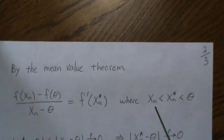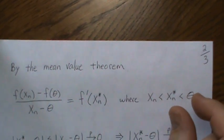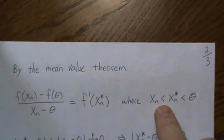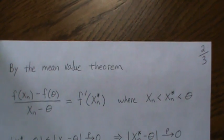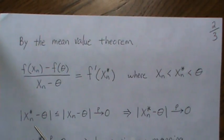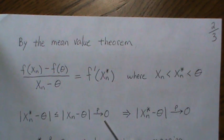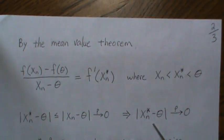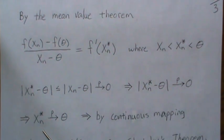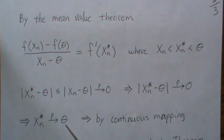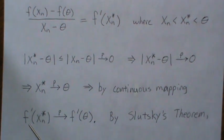Notice that X_n converges in probability to theta, so this pinches down, and since X*_n is always between those two endpoints, if X_n converges in probability to theta then so would X*_n. We can see that because this difference is always less than that difference, and this converges in probability to zero, which implies X*_n converges in probability to theta.